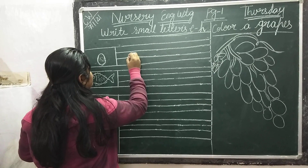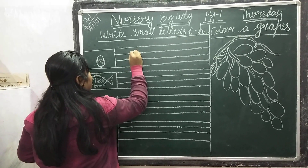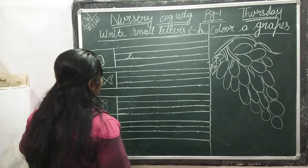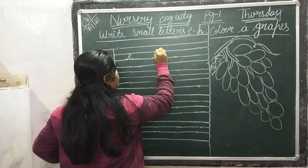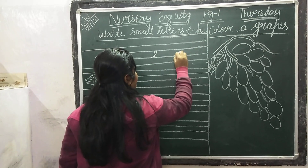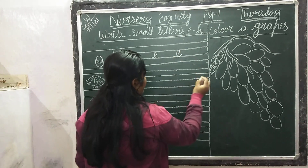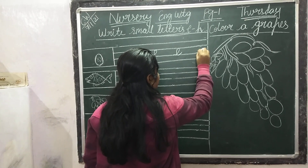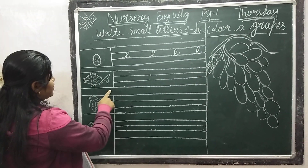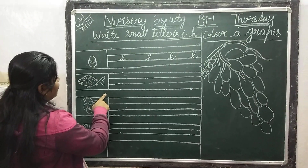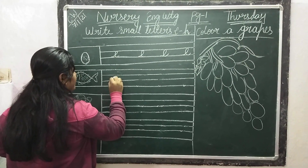So write here small letter E. E for egg. Again E. E for egg. Next F for fish.